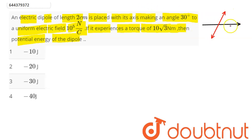So we can say here this is our electric field and this is our dipole moment here making an angle of 30 degree. So we can say here the torque relation is given here as p cross e...